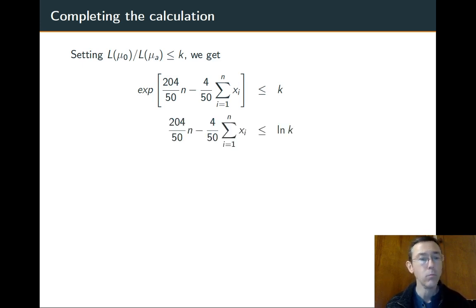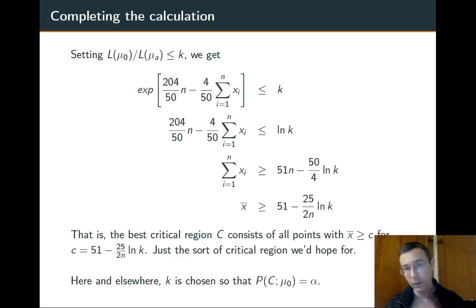And then I'm going to move the summation to its own side and multiply by 50 over 4 to get the sum of x_i on its own. So in a sense we've accomplished that goal that I mentioned a bit ago about getting the x_i's on their own. I'll do one more thing though and that's to divide both sides by n because when I do that I have a sample mean on the left. So the best critical region C is going to consist of all points where the sample mean is greater than or equal to 51 minus 25 over 2n ln(k).